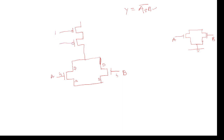Here we need to go with PMOS in series for the pull-up network. Supply VDD is required and ground is required. We take the output Vout in between the pull-up and pull-down networks. The circuit is now complete. In the pull-down network NMOS transistors are used, and in the pull-up network PMOS transistors are used. Both are complementary.